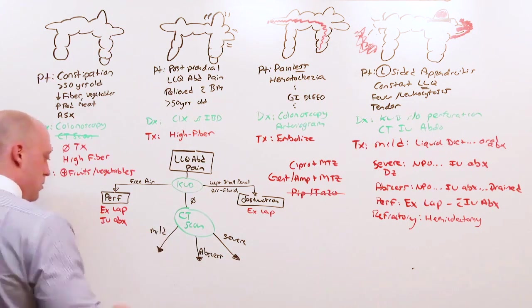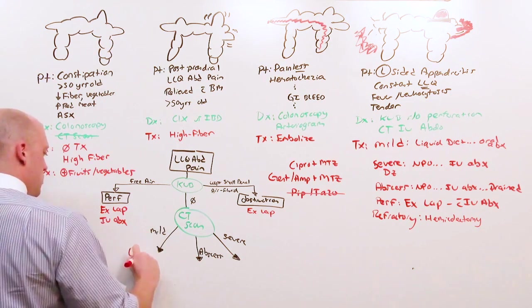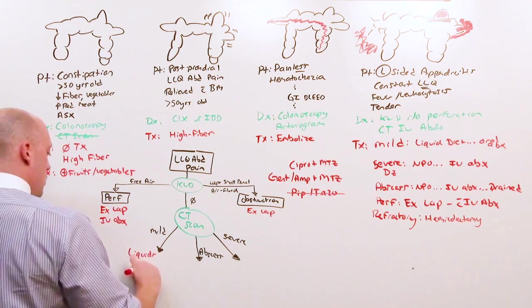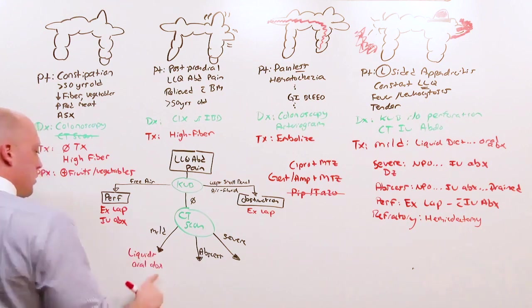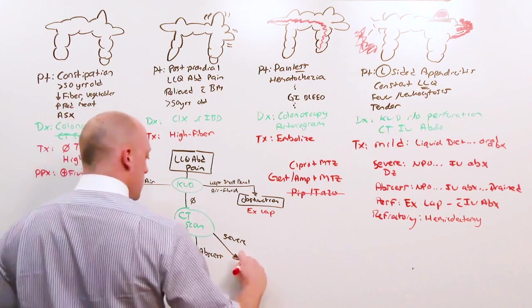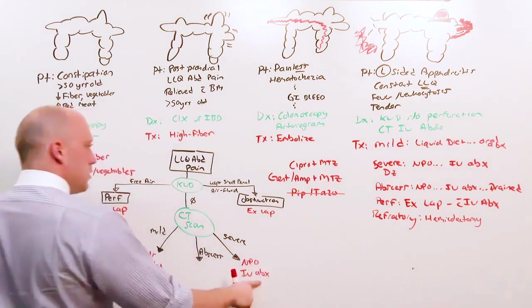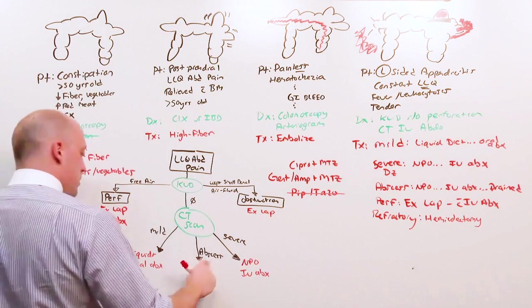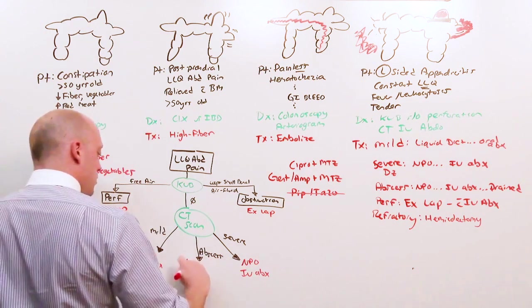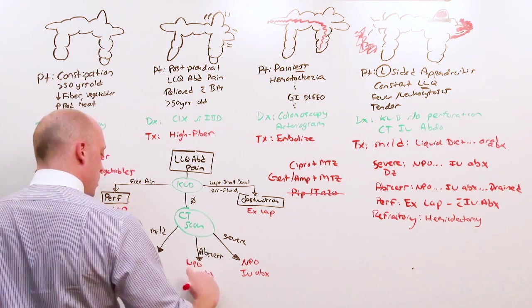Mild disease: liquids, oral antibiotics, ciprofloxacin and metronidazole. Severe: NPO, IV antibiotics, ciprofloxacin and metronidazole. Abscess: NPO, IV antibiotics, drain. And that is diverticular disease.